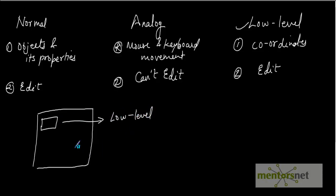For the next test case, if you want to check the properties of an object - for example, whether the name of the object is 'xyz' or not - use normal recording, which works on objects and their properties.